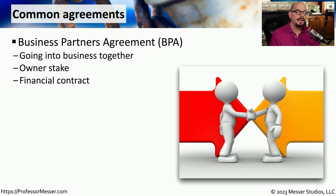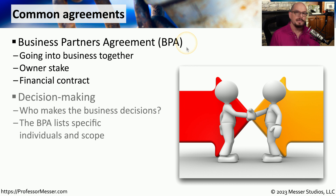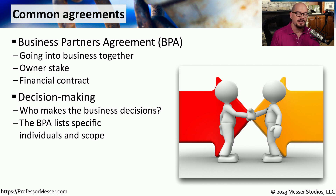If you're entering into a formal partnership with a third party, you may want to create a Business Partners Agreement, or BPA. This describes the financial details associated with the agreement and what type of ownership stake is acquired. It also describes how the business will operate with this partnership in place — for example, who in the partnership gets to make the business decisions. That information is documented in the BPA.